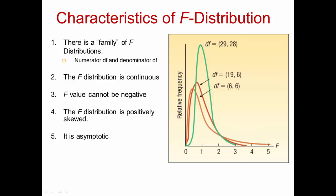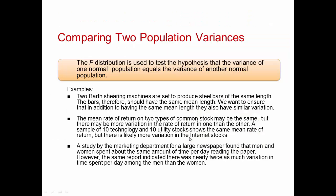When might we use the F-distribution to compare variances? In these examples, we have two Barth shearing machines set to produce steel bars of the same length. The bars should have the same mean length, but we also want to ensure they have similar variation. So we can compare the variance of the two machines. The F-distribution is used to test the hypothesis that the variance of one normal population equals the variance of another normal population.